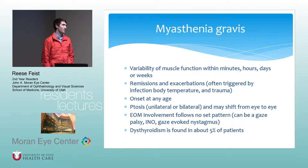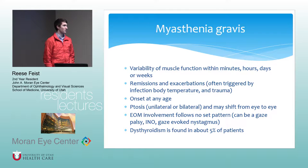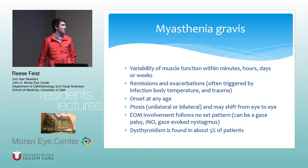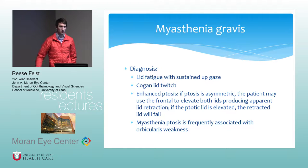Onset can occur at any age. Ptosis can be unilateral or bilateral and can shift from side to side. Extraocular movement involvement follows no set pattern — it can be a gaze palsy, nystagmus, or internuclear ophthalmoplegia. There is an association with dysthyroidism — not common but more common than you'd expect — and patients with dysthyroidism can also have myasthenia. Classic signs include lid fatigue with sustained up-gaze, Cogan lid twitch: if you have patients look down for 10 to 15 seconds then look up to primary position, you can get an overshoot of the eyelid.